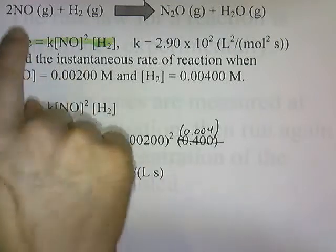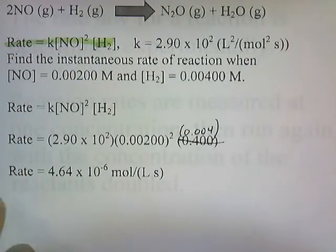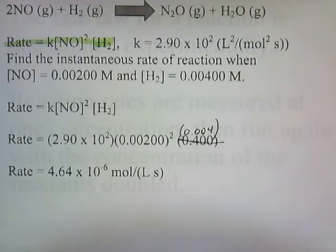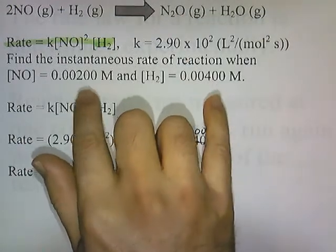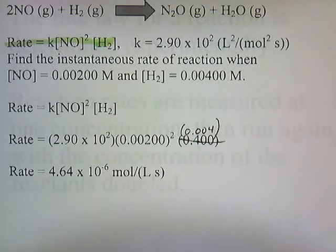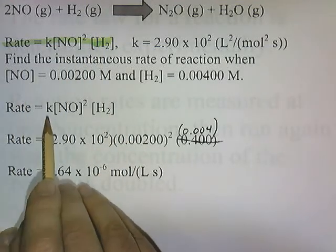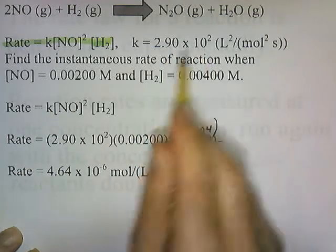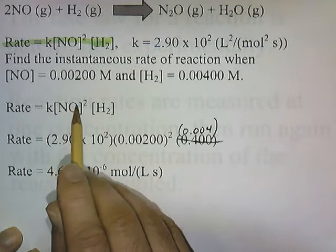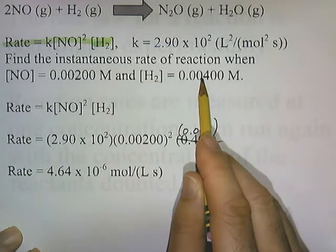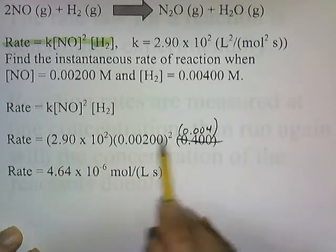The rate law for this reaction is given, and the value of K is given as well. We want to find the instantaneous rate of reaction when the concentration of NO is 0.002 and the concentration of H₂ is 0.004 — so how fast is product being made the instant the reactants are at these concentrations? It's just a plug-and-crank problem. We rewrite the rate law and plug the numbers in: K is 2.9 times 10 to the 2, concentration of NO is 0.002, and concentration of H₂ is 0.004.